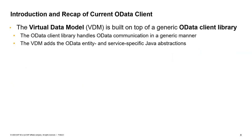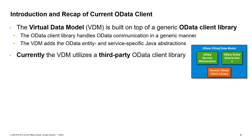I want to spend a few words on the distinction between the virtual data model and the OData client library, as this will be important for the subsequent slides. The VDM is built on top of a generic OData client library. The OData client library handles OData communication generically — for example, payload serialization and deserialization. The VDM sits on top and adds OData entity and service-specific Java abstractions. Currently, the VDM utilizes a third-party OData client library.